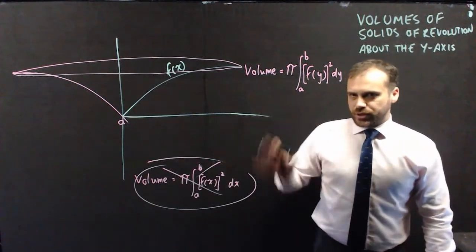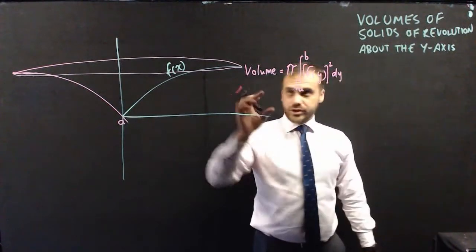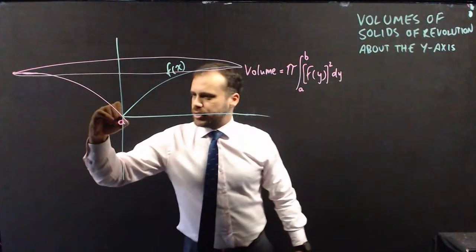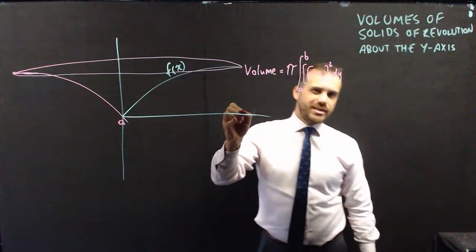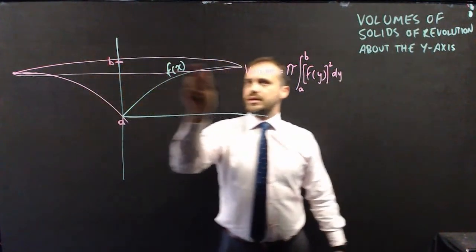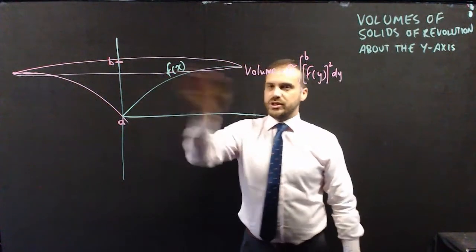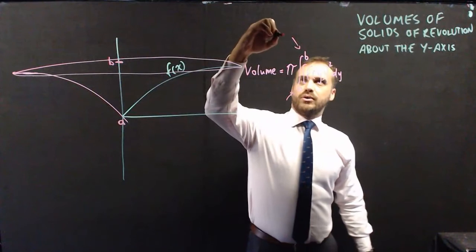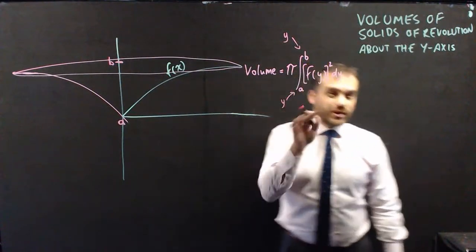Let's get rid of this stuff we don't need and talk about that for a second. So first of all, looking at that b and that a. The a is this point here still, but the b is not this point here. The b is this point here in line with where we're finishing there. So these values are y values, not x values.